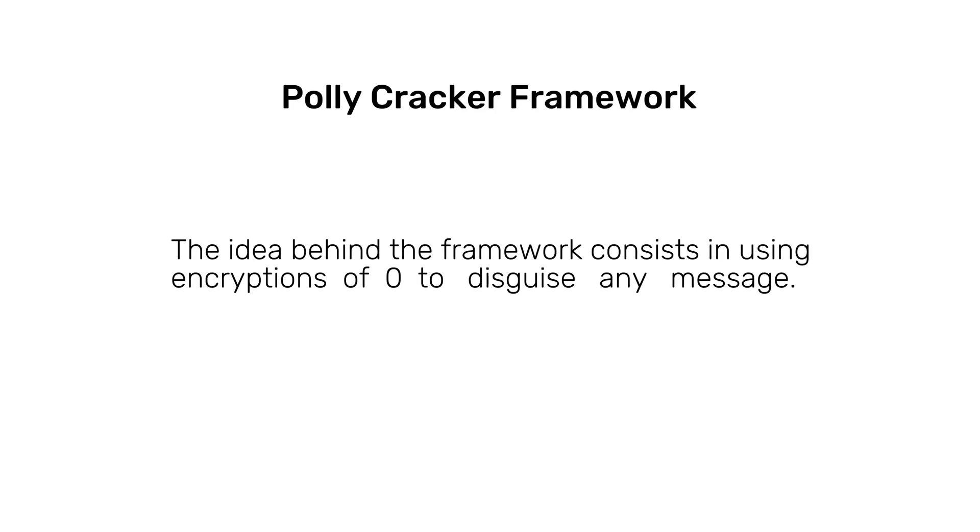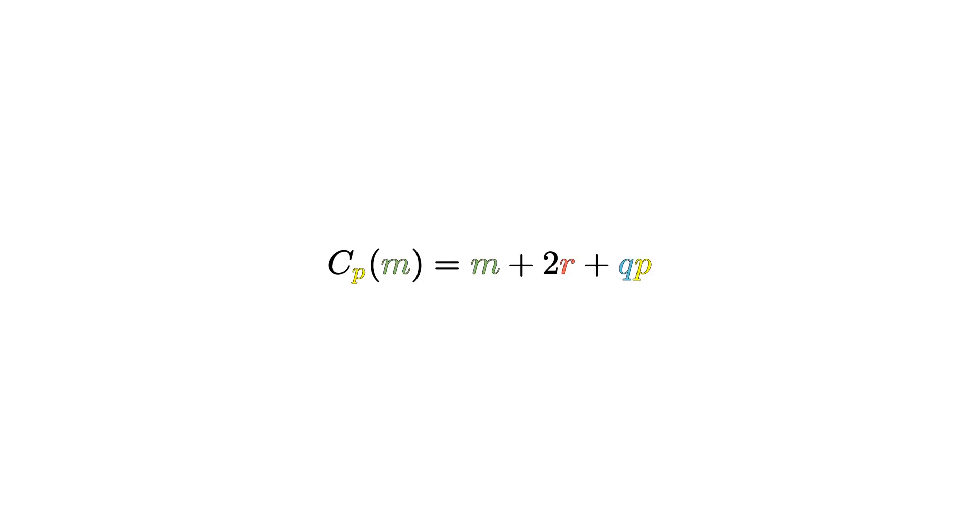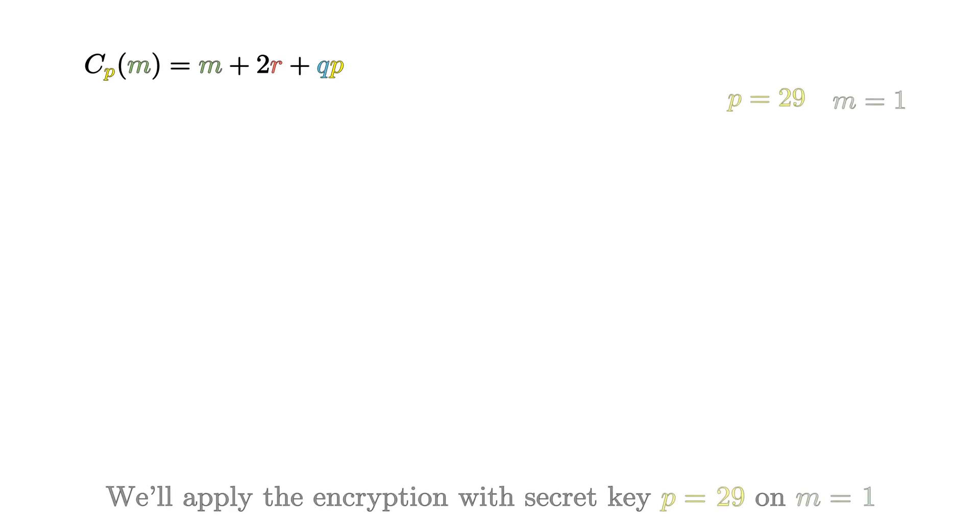The Polycracker framework aims to use encryptions of 0 to disguise any message. In practice, we can use this idea to build a simple scheme that encrypts a 1-bit message, so it can either be 0 or 1, and that operates in the ring of integers modulo a large prime p that should always remain hidden. It is, in fact, the secret key.